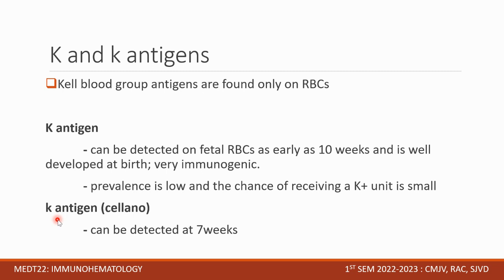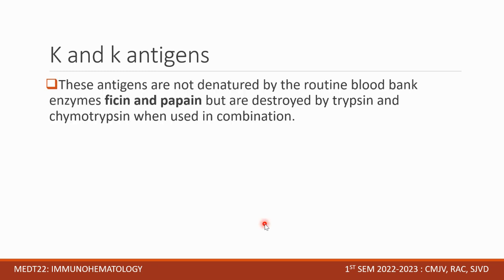The Kn28 antigen, also called Selanone, can be detected at seven weeks after birth. These antigens are not denatured by the routine blood bank enzymes phycine and papain, but are destroyed by trypsin and chymotrypsin when used in combination.